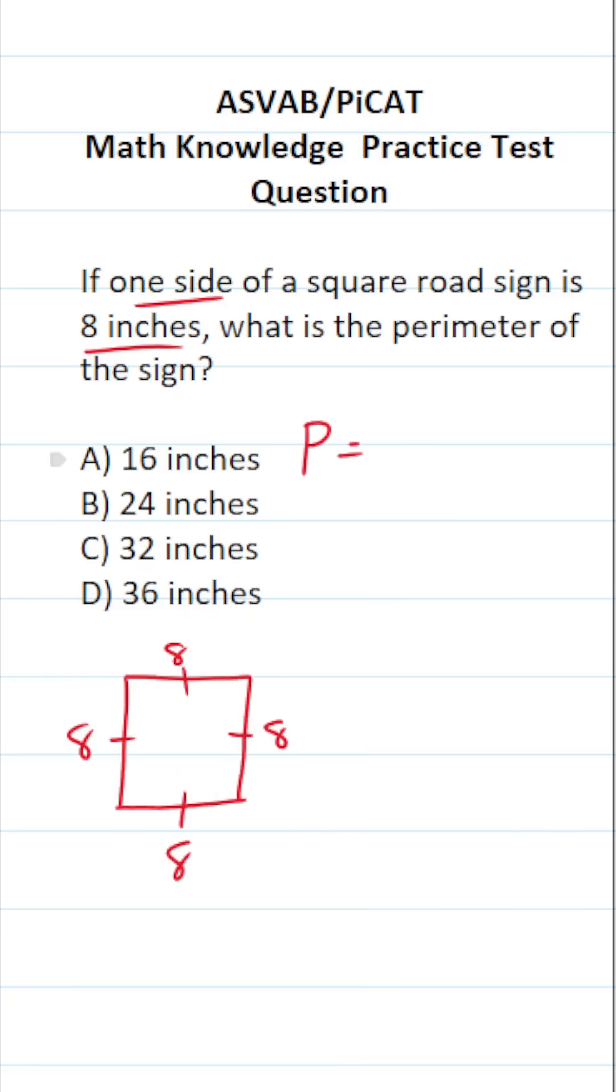The second thing you need to know is regarding finding perimeter. In order to find perimeter of any regular polygon, including a square, you simply add up all of its sides.